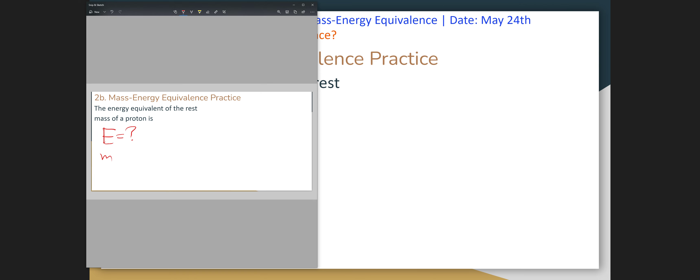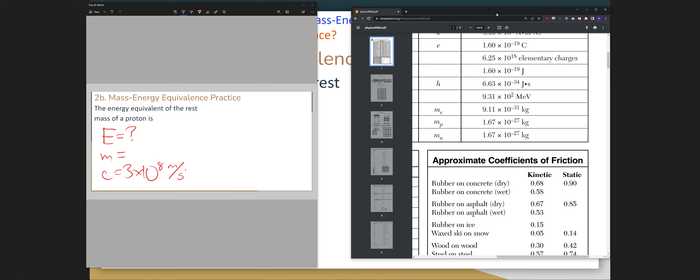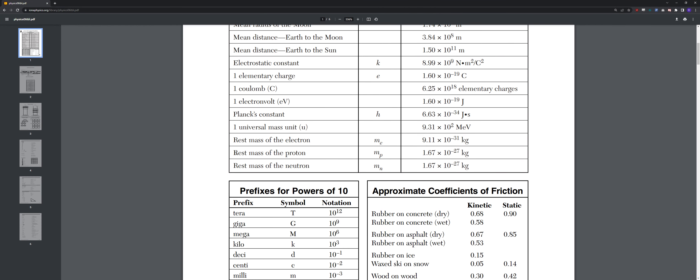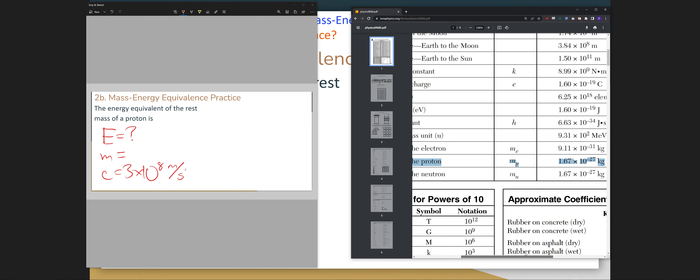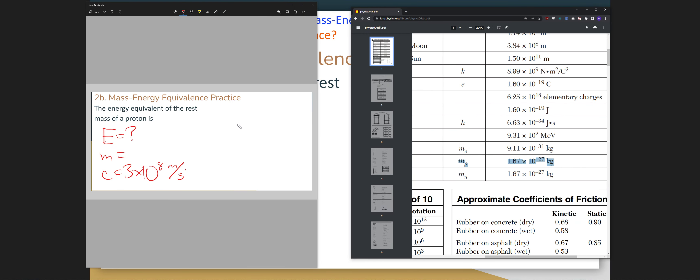We don't know the mass, but we do know the speed of light. Where do we find the mass of a proton? You go to your reference table again, first page. Mass of a proton is 1.67 times 10 to the negative 27 kg. And then you're going to do your math here.